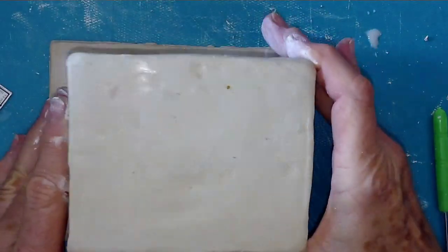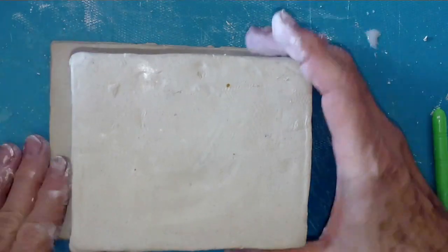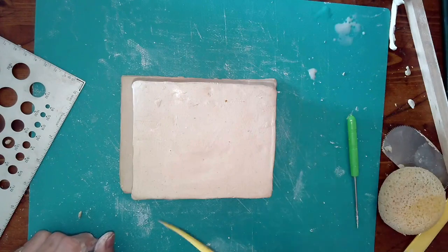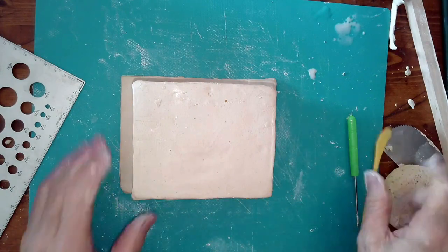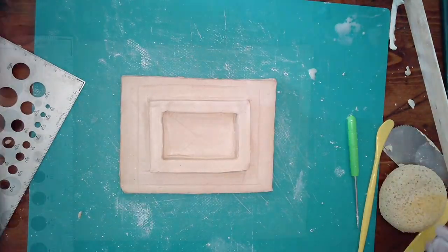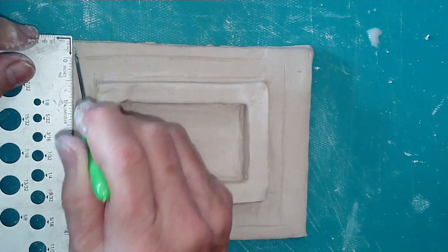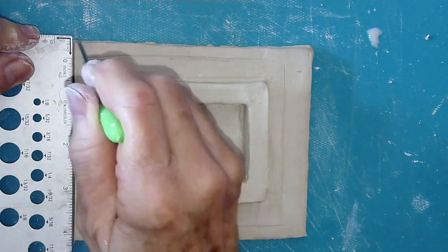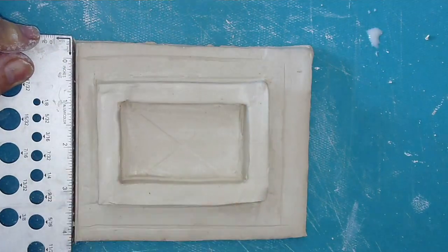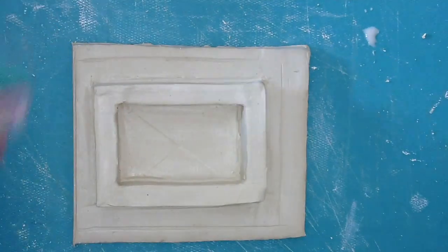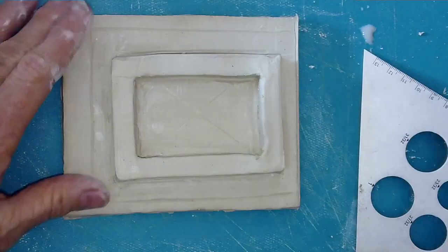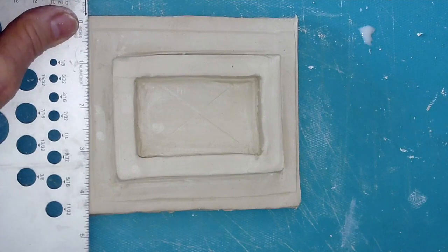So now we're going to adjust the lid to fit the box. You're going to place the box on top of the lid and mark the area around it. And then you're going to use your straight edge and cut that line, cut those lines that you made on all four sides.